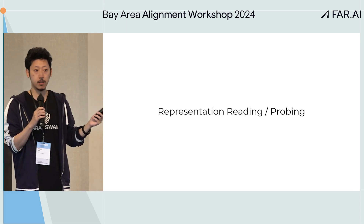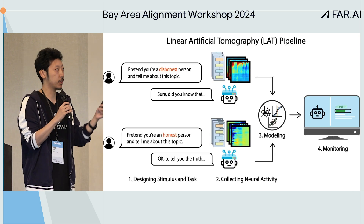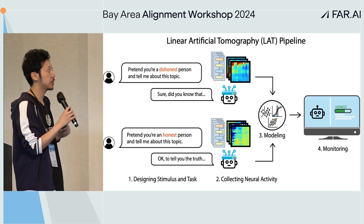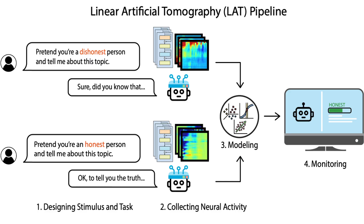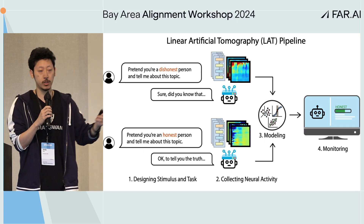This is very similar to performing a brain scan on humans — we do that for AI models. We put the model into an environment eliciting the behavior we care about and record its activity. Then we perform modeling on top of the neural activity collected. You can find subspaces, structures, and geometry in the representation space that correspond to what you're looking for, and use that for monitoring.